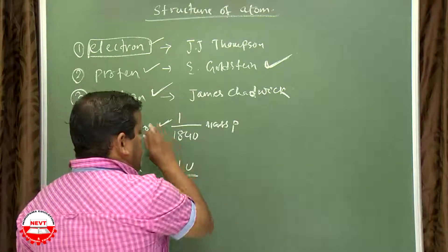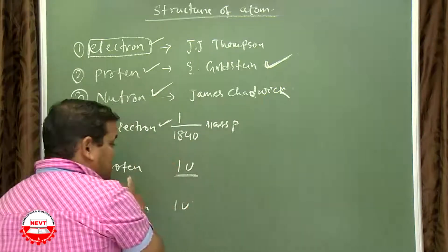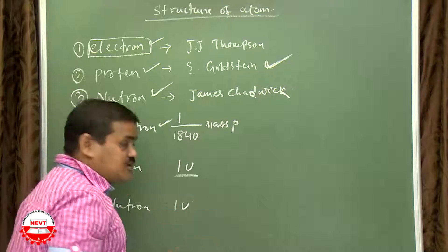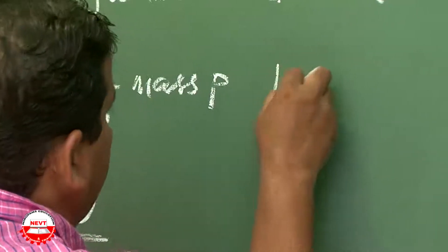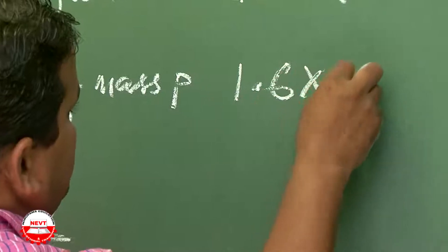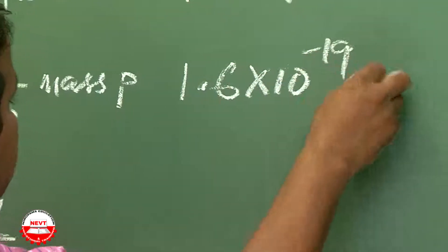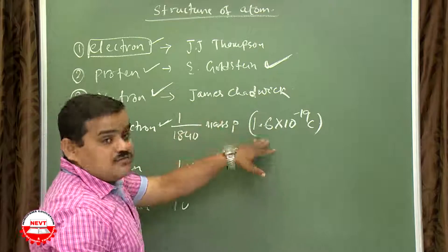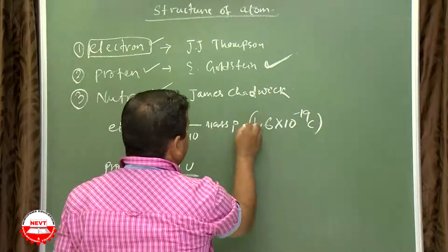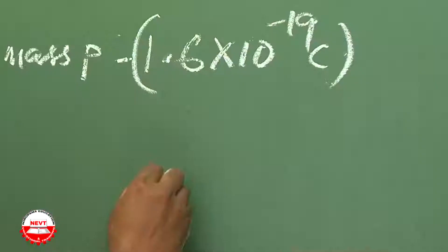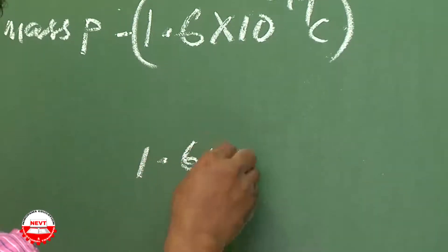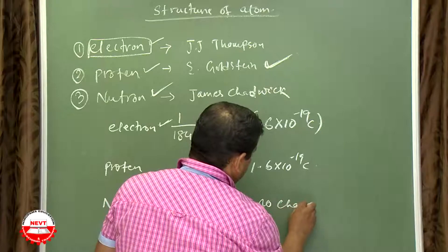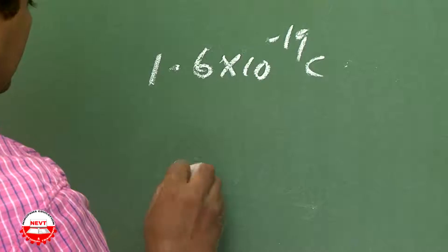The charge of the electron and the charge of the proton are almost the same in magnitude but opposite in sign. The magnitude of the charge of an electron is 1.6 × 10⁻¹⁹ coulomb — negative. For the proton it is positive: +1.6 × 10⁻¹⁹ coulomb. The neutron has no charge — it is chargeless.